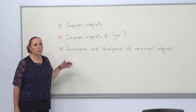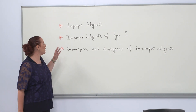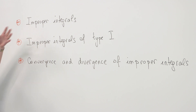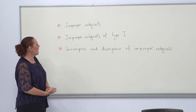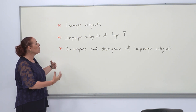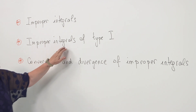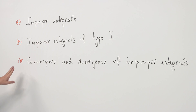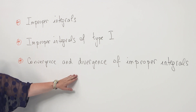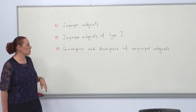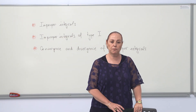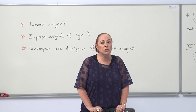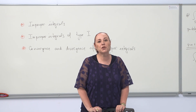To sum up, in this video we learned about improper integrals — what they are and how they differ from definite integrals. We covered the classification of type 1 improper integrals and how to define them using limits. We also learned about convergence and divergence. This was just an overview of improper integrals of type 1; if you want to learn the subject in depth, you'll need to do some more reading. I hope you found this video helpful.